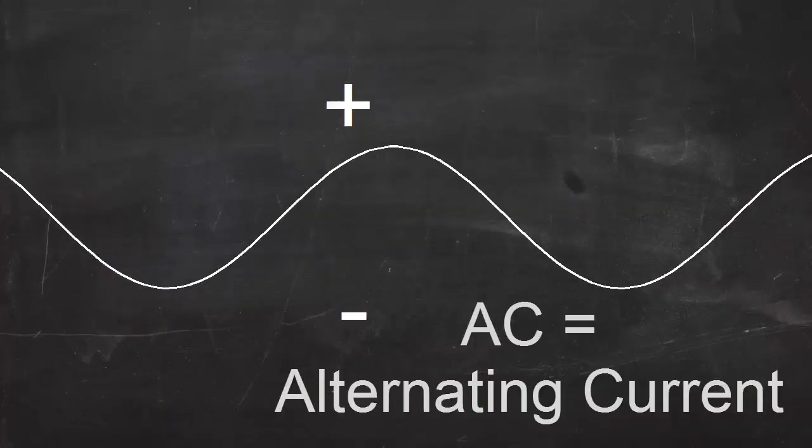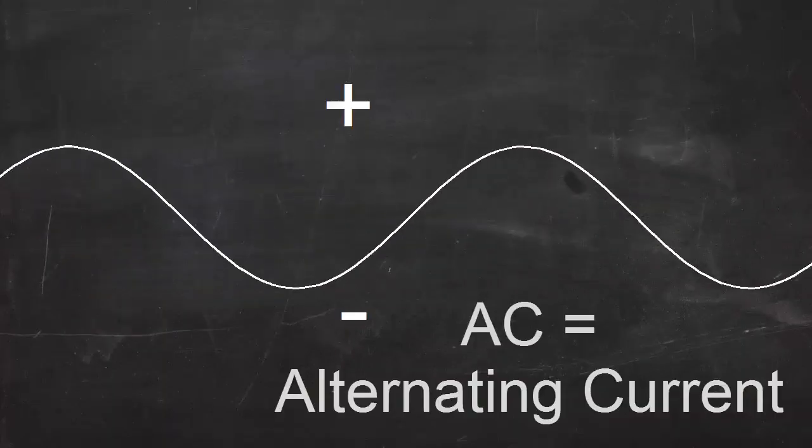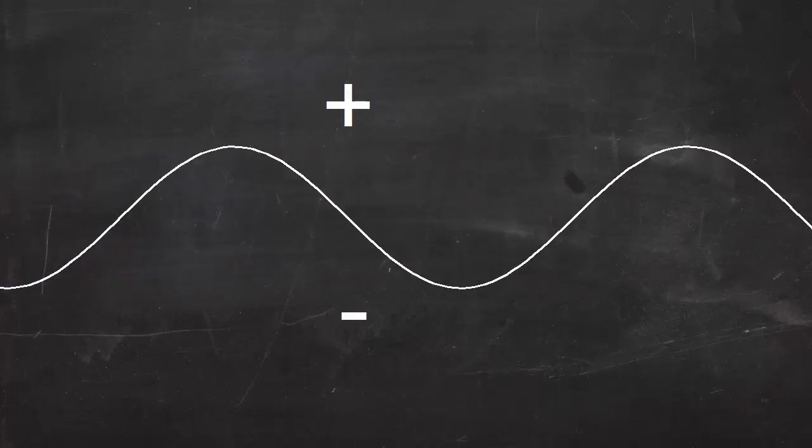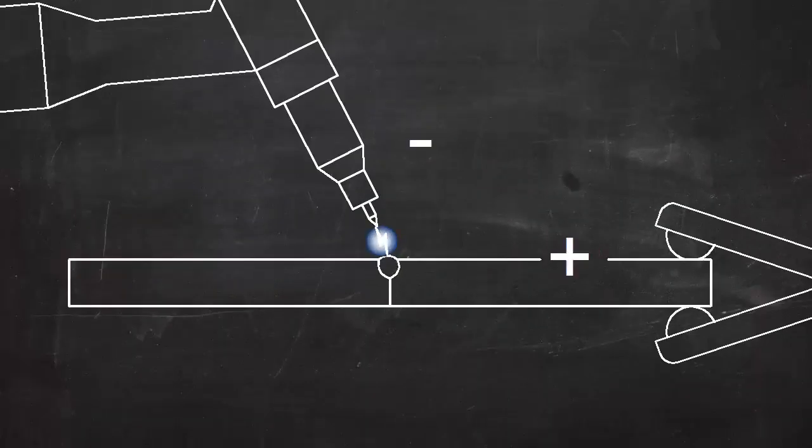When welding aluminum, however, AC is used. In AC, the positive and negative voltages switch back and forth between the electrode and the workpiece. This puts more heat on the electrode, but it has a cleaning effect on the workpiece. Aluminum forms oxides that float to the top of the weld pool and prevent a good weld. AC current helps control these oxides.